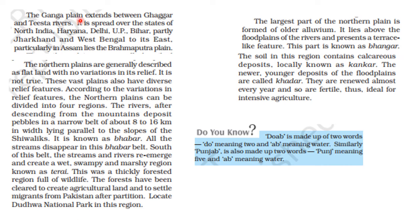The Ganga plain extends between the Ghaghra and Teesta rivers and is spread over the states of northern India — Haryana, Delhi, Uttar Pradesh, Bihar, parts of Jharkhand, and West Bengal to its east. Practically in Assam lies the Brahmaputra plain.